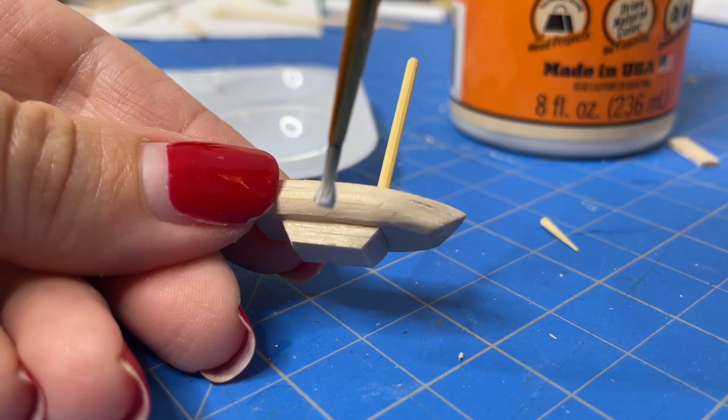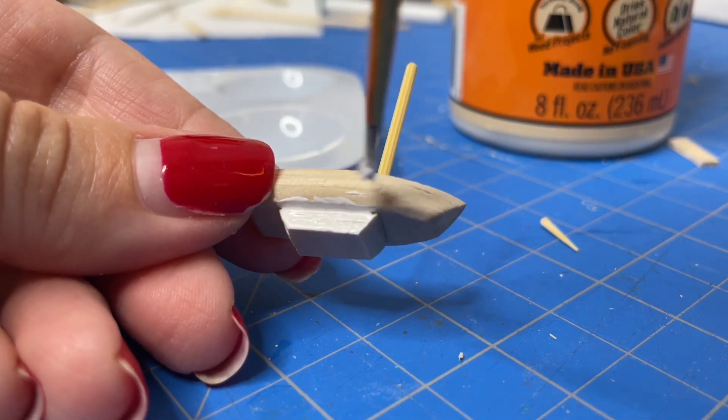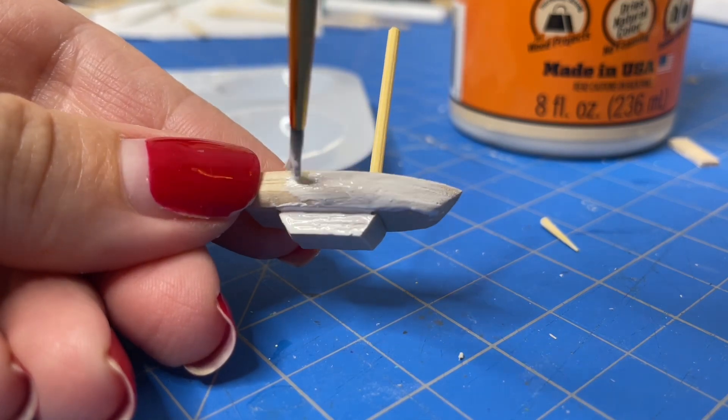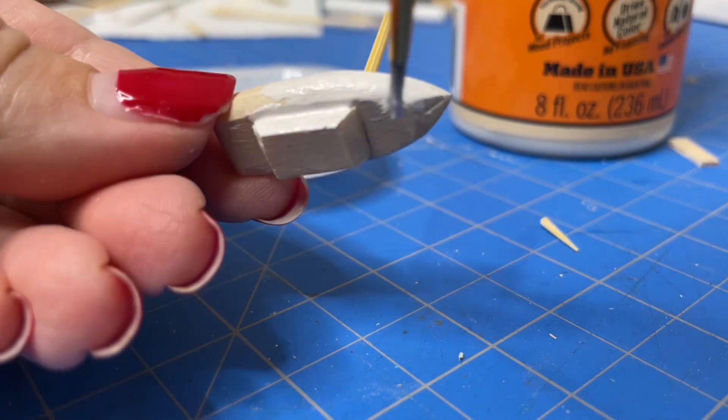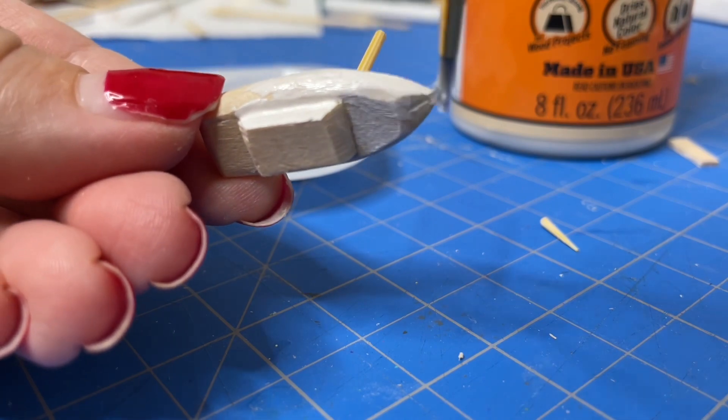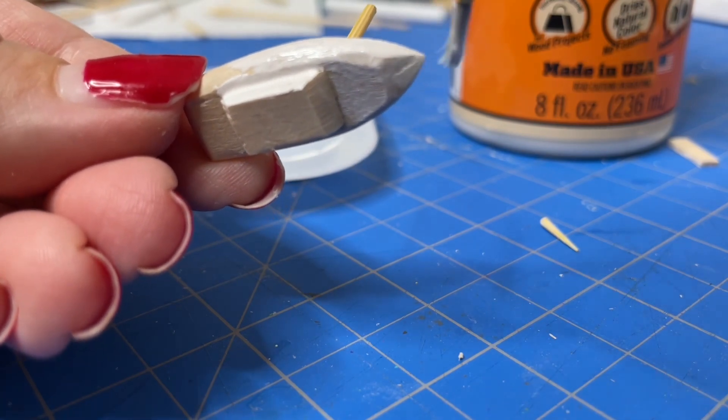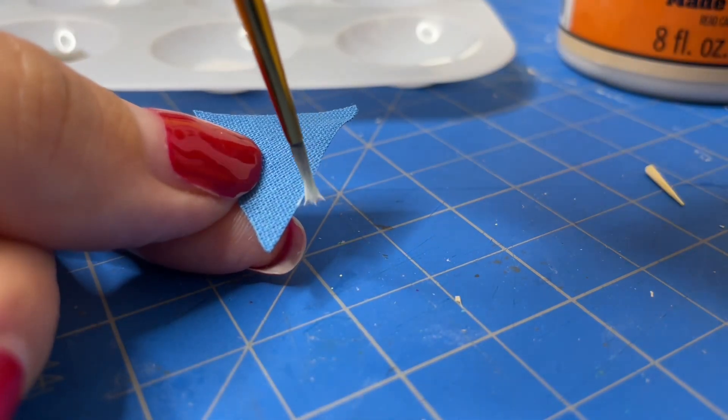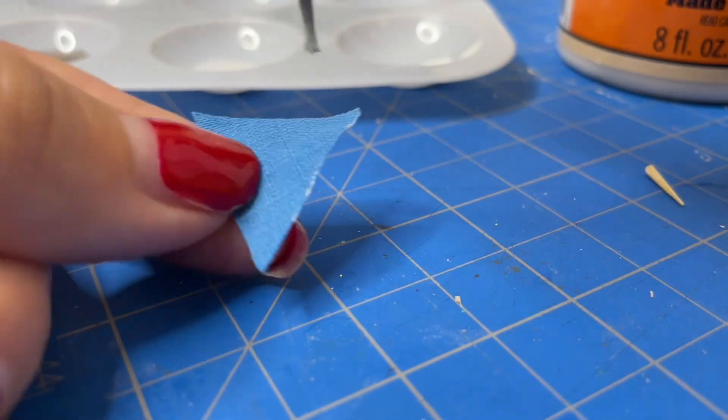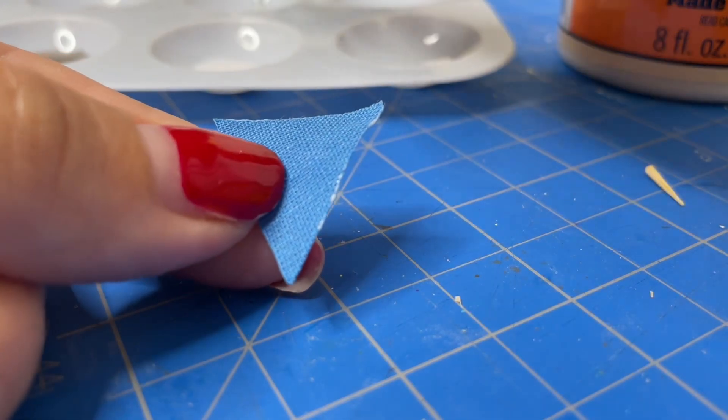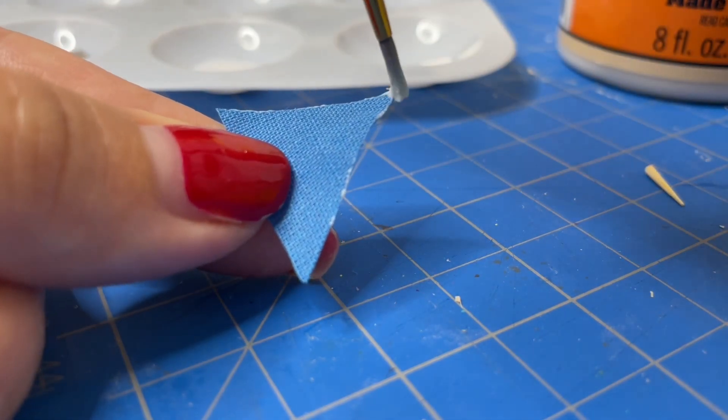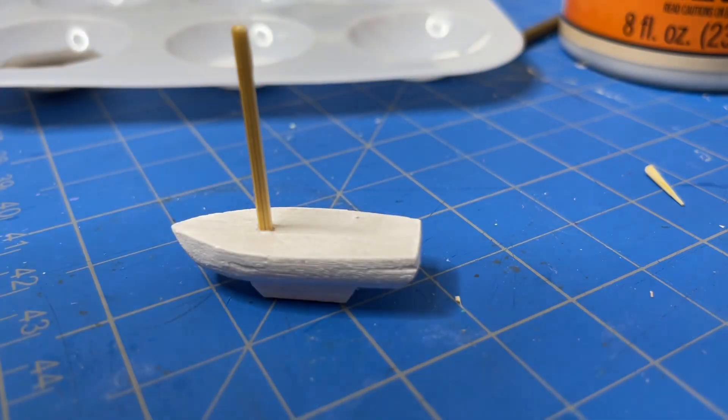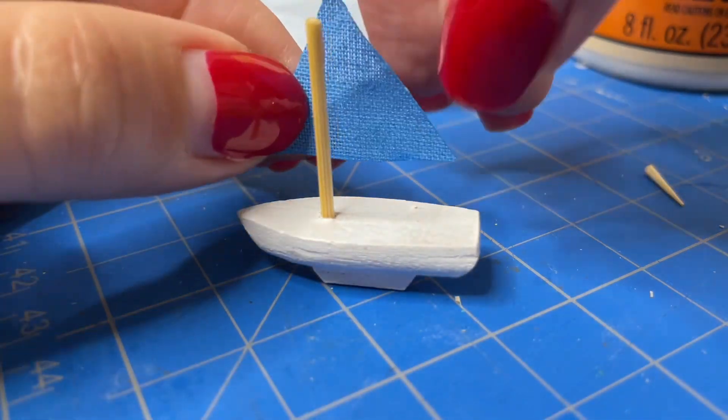Now that we have the entire boat finished I'm just going to paint it in a layer of white paint. And I'm going to use some matte Mod Podge to seal the edges of this blue fabric that is going to be my sail. And this Mod Podge will keep the edges from fraying. And I'm just going to attach the sail using some glue on one side of the toothpick.